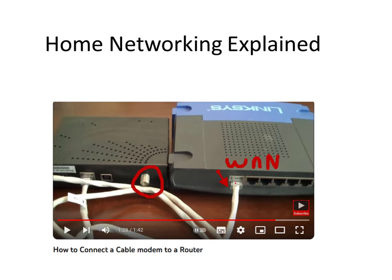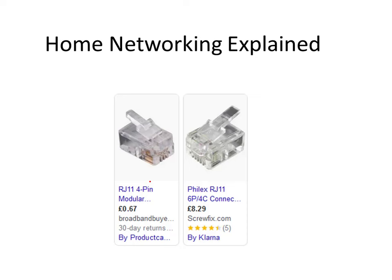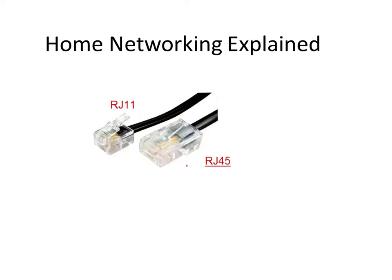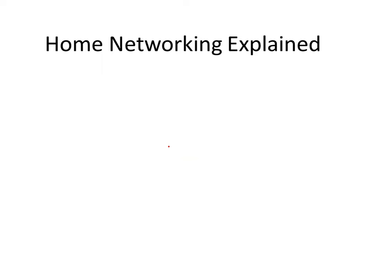An ethernet cable plugs into the cable modem and into the WAN port of your router. Ethernet connectors are called RJ45s, and you can see them here side by side with an RJ11. This one is your telephone connector and this one is your ethernet connector. They look very similar — both use unshielded twisted pair — but the ethernet cables tend to be thicker than the telephone cables, so you'll be able to tell them apart when you see them.